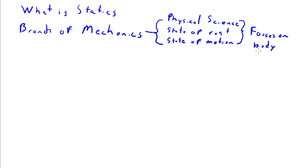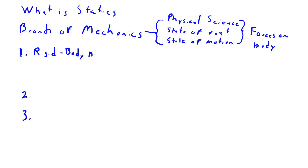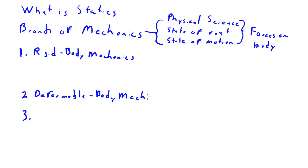So what's a body? A body is some physical object in the universe. We broadly break mechanics up into three disciplines. The first is what we call rigid body mechanics. The second is what we call deformable body mechanics. And the third is what we call fluid mechanics.